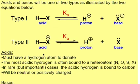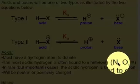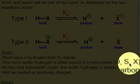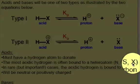There has to be a hydrogen atom that can donate for an acid. Oftentimes, the most acidic hydrogen is bound to a heteroatom - normally nitrogen, oxygen, sulfur, or a halogen X.